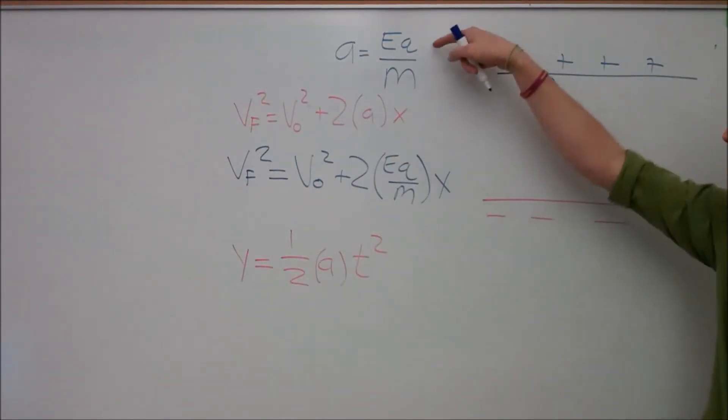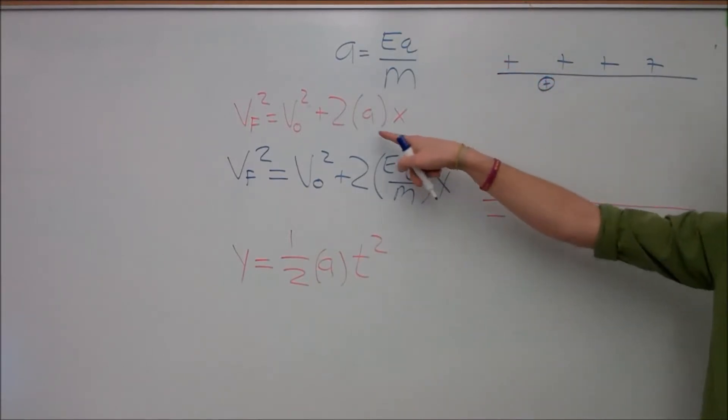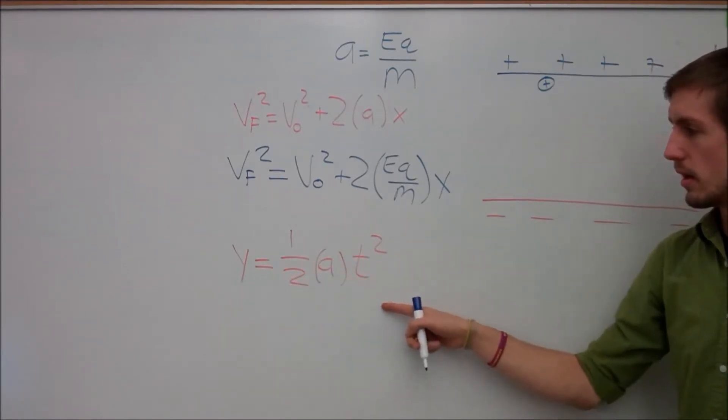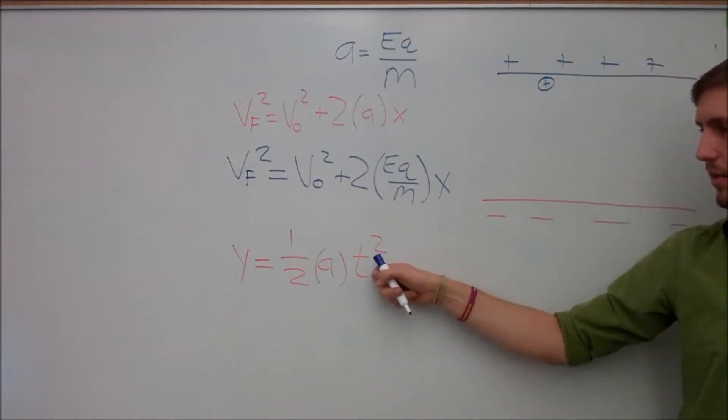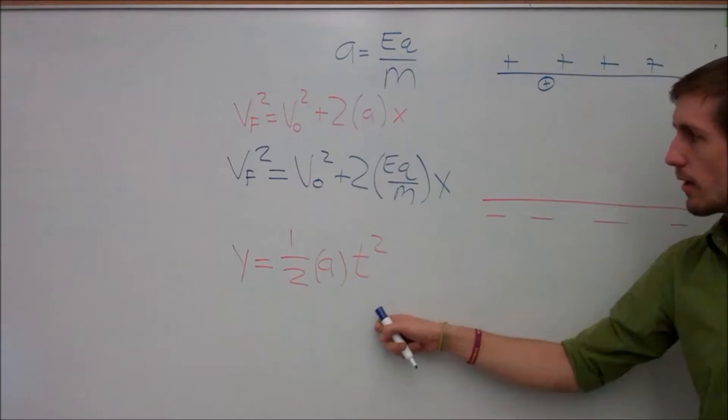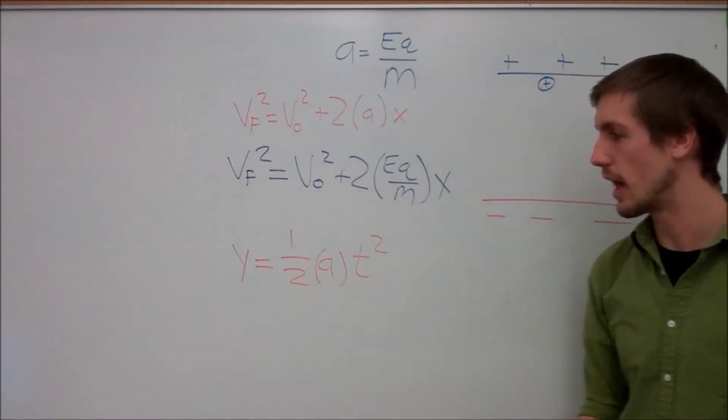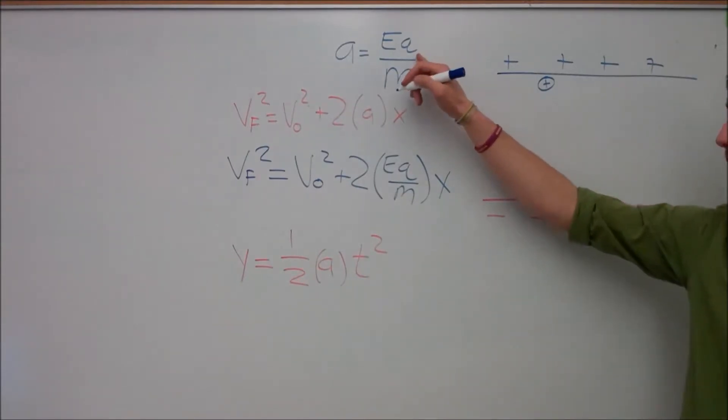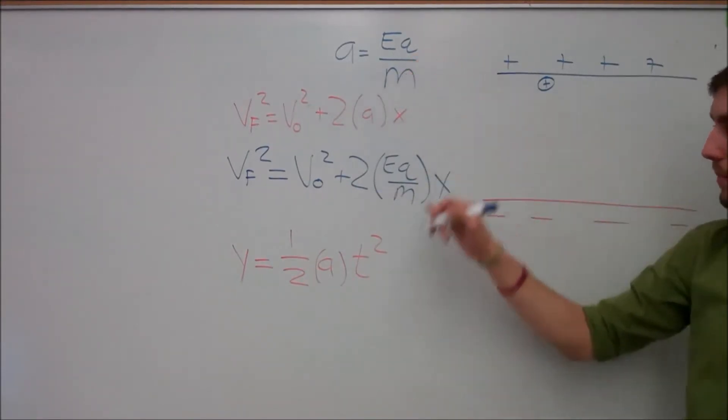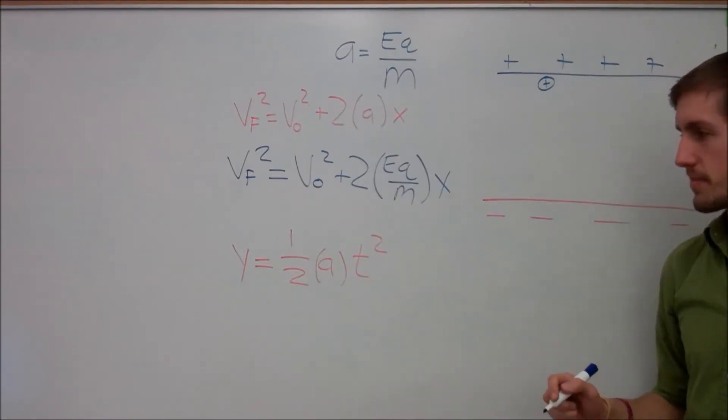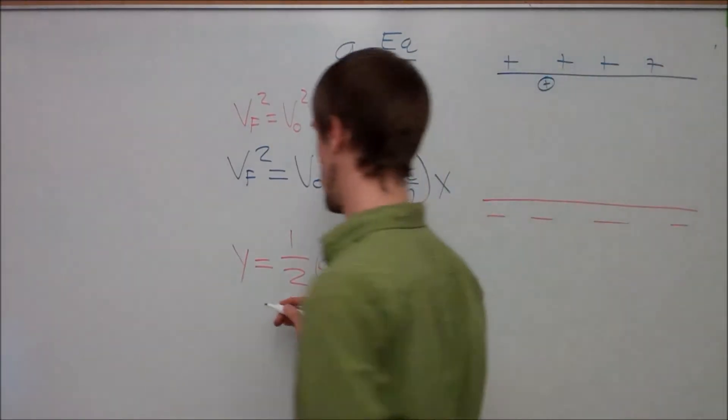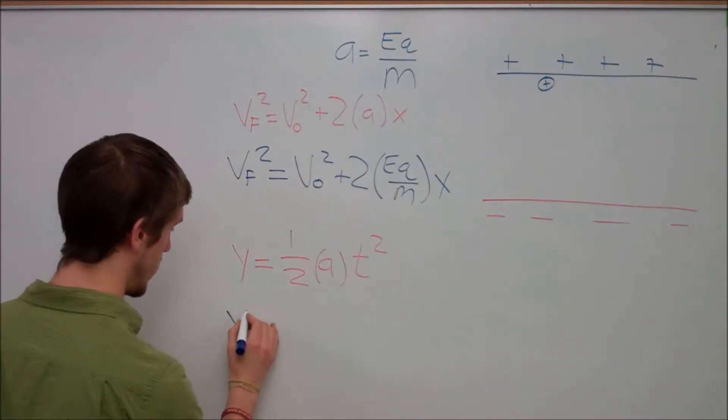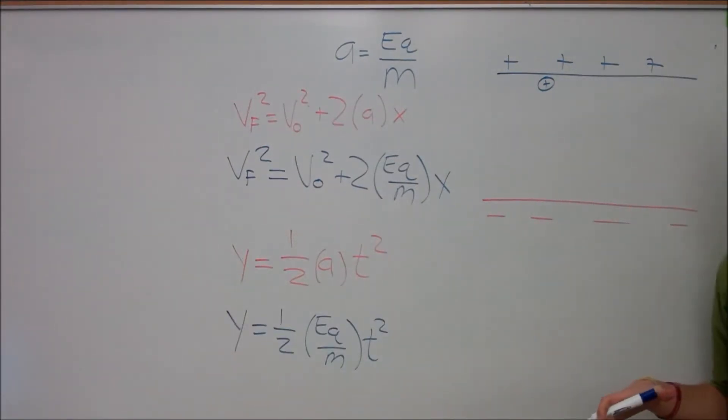We can rearrange this any way we want it to. Where we have now substituted in EQ over M into every place where we see an A. And we can do that same thing here. And we could solve for time. We could also solve for how far the object falls. But again, substituting in EQ over M into our acceleration spot. And we'll get this. How is that looking now?